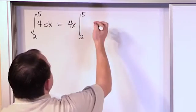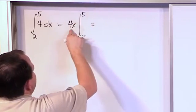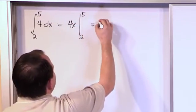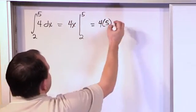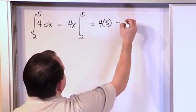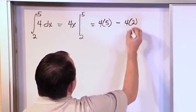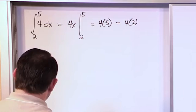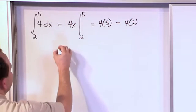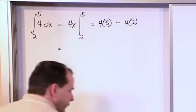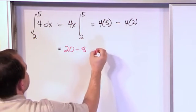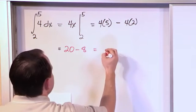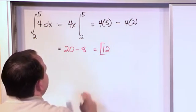So, from the fundamental theorem of calculus, you evaluate the anti-derivative at the top limit of integration first, so that's 4 times 5, it goes wherever x is, and you subtract off evaluating it at the bottom, 4 times 2. Alright, so make sure you understand that. So, what you'll get is 4 times 5 is 20, minus 8, and so what you'll get is 12. And this is the answer.